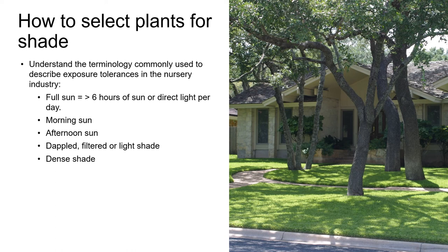Exposure tolerances that you'll see include full sun, morning sun, light shade, dappled shade or filtered shade, and dense shade. Full sun is generally understood to be at least six hours of direct sun per day. Morning sun means direct sun up until around noon, and afternoon sun is direct sun from around noon until dusk. Morning sun is less stressful for plants than afternoon sun because by the afternoon heat has begun to build up and plants may be beginning to suffer some drought stress — particularly true in hotter inland areas away from the coast in California.